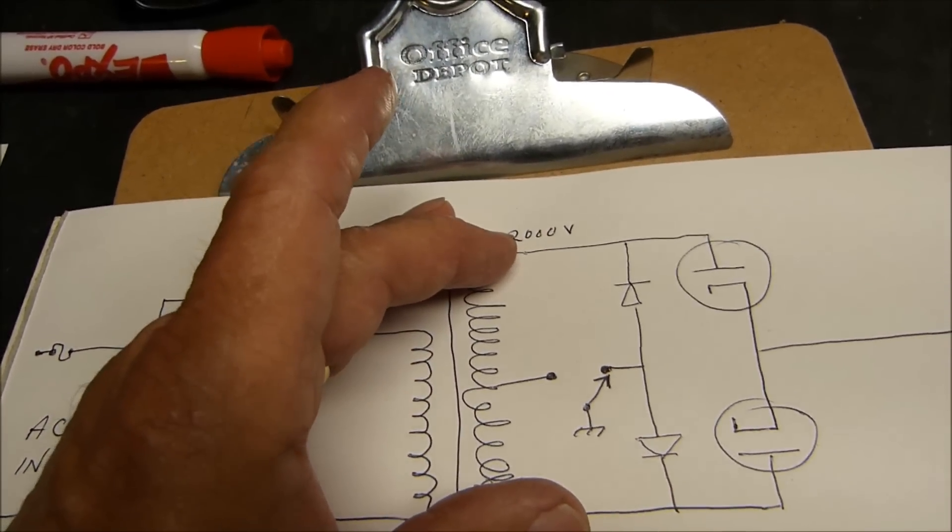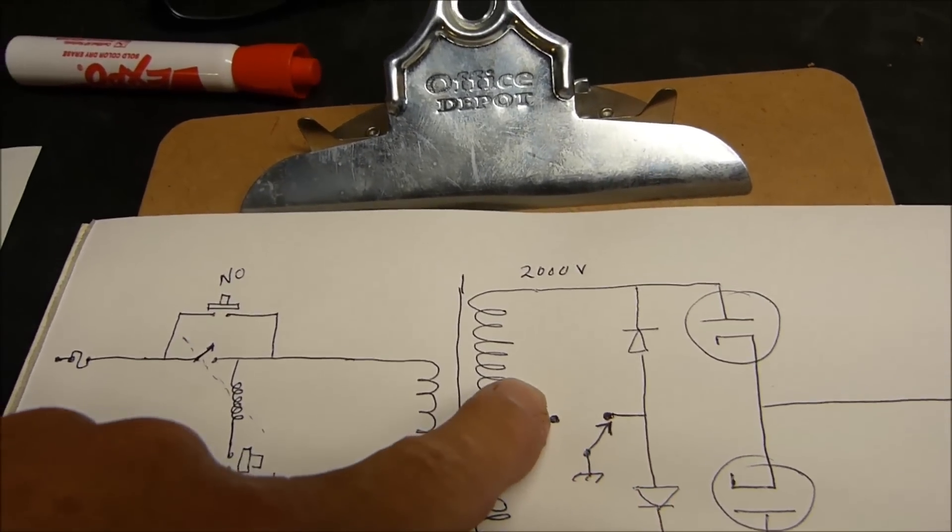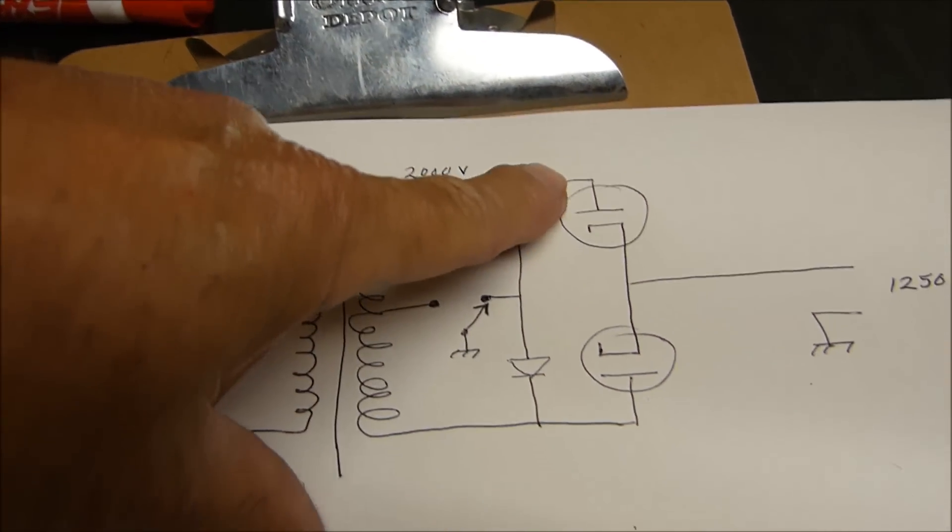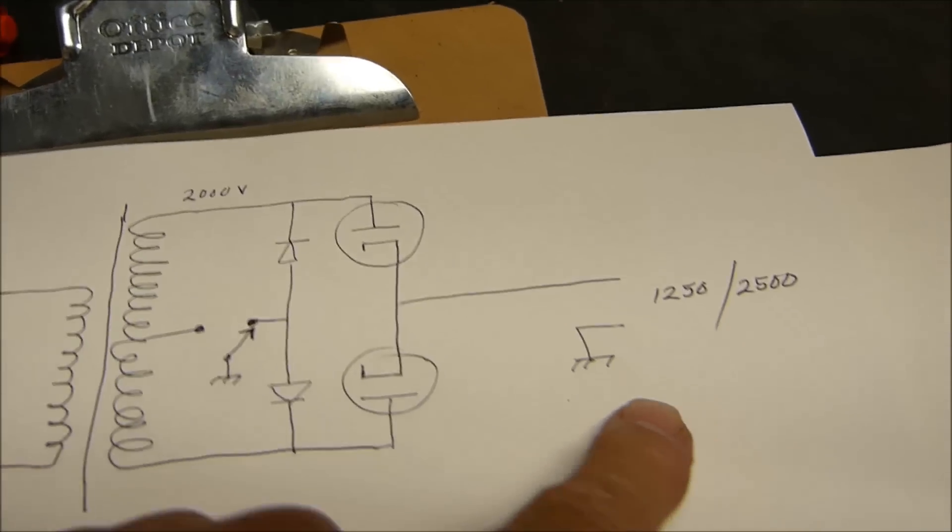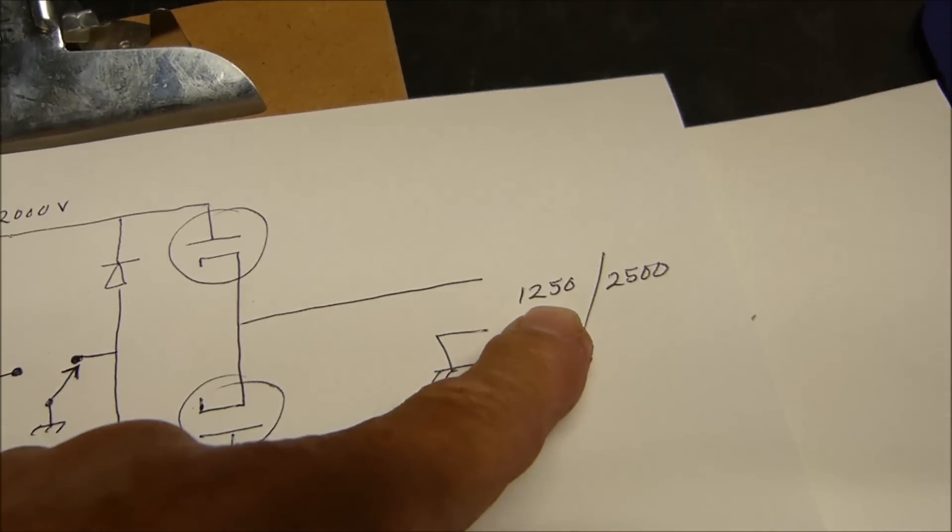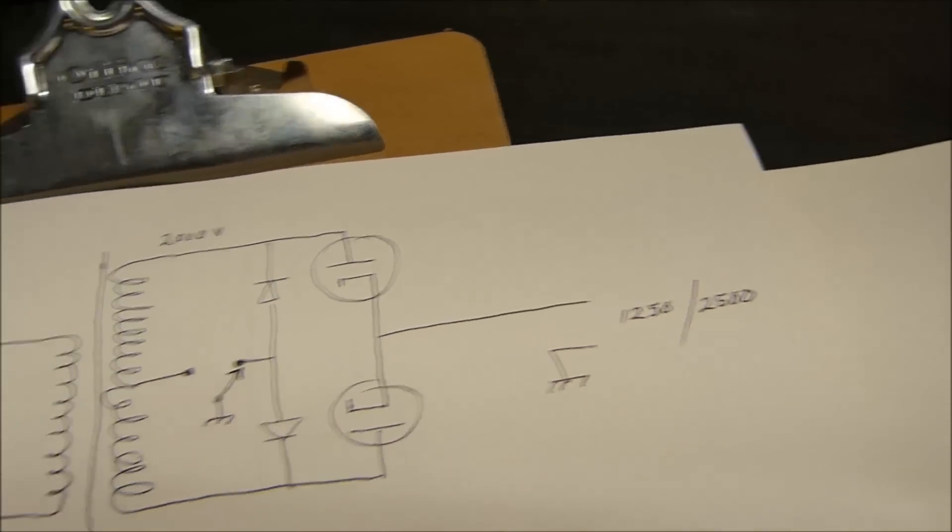So I'd get like 2,600 volts. Or if I flip the switch over here I'll be grounding the center tap - I won't even be using these two, I'll just be using the vacuum tube rectifiers and I'll get half the voltage. So I figure I'm going to get somewhere around 1,250 volts on the low end and 2,500 on the high end.